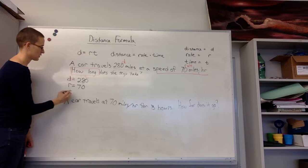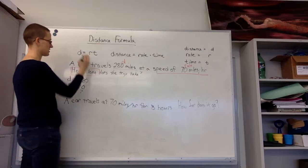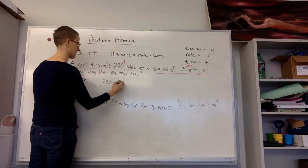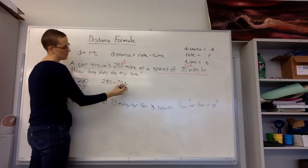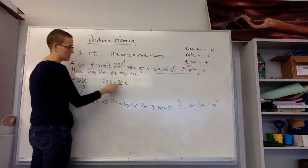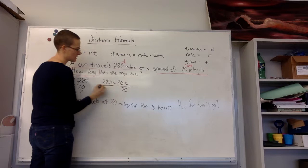So if I plug my values into the equation, distance 280 equals my rate times time. Two variables next to each other mean that we multiply. If I have a t sitting over here by itself, I need to get it alone. To do that, I need to get rid of the 70. The opposite of multiplying 70 by t is dividing, so I'm going to divide both sides by 70.